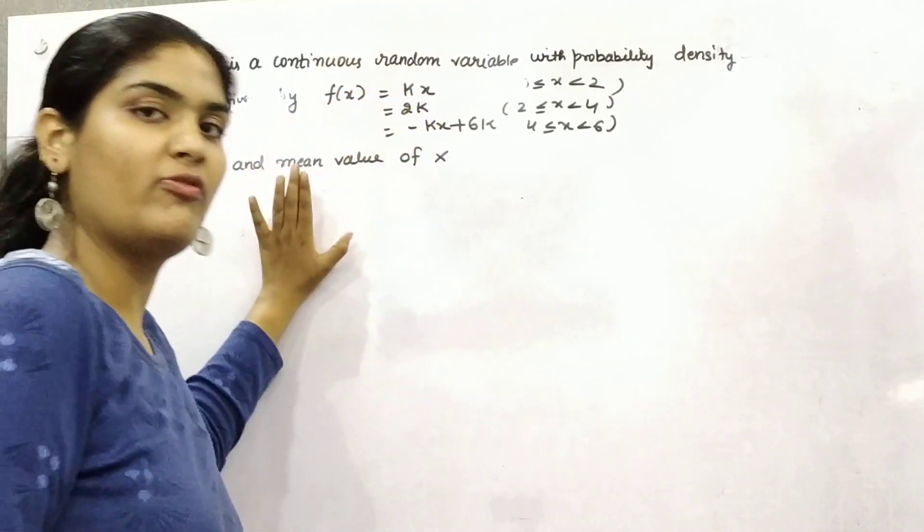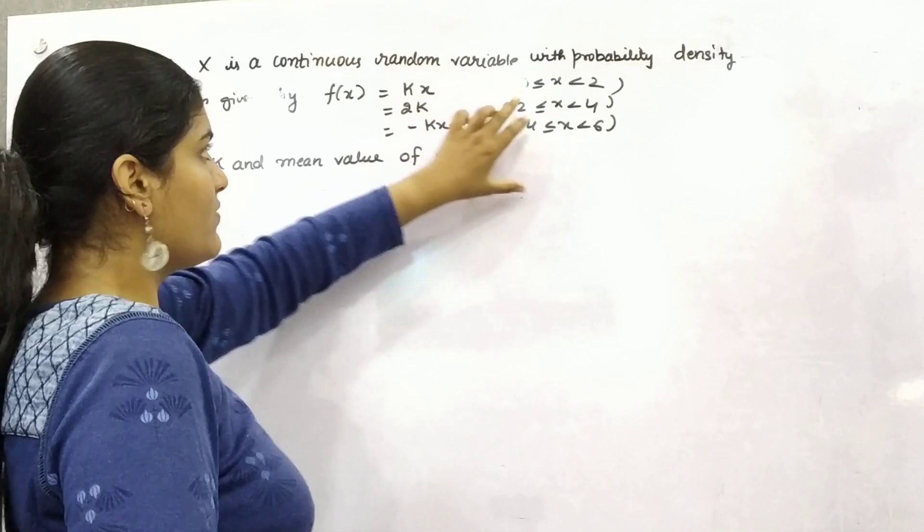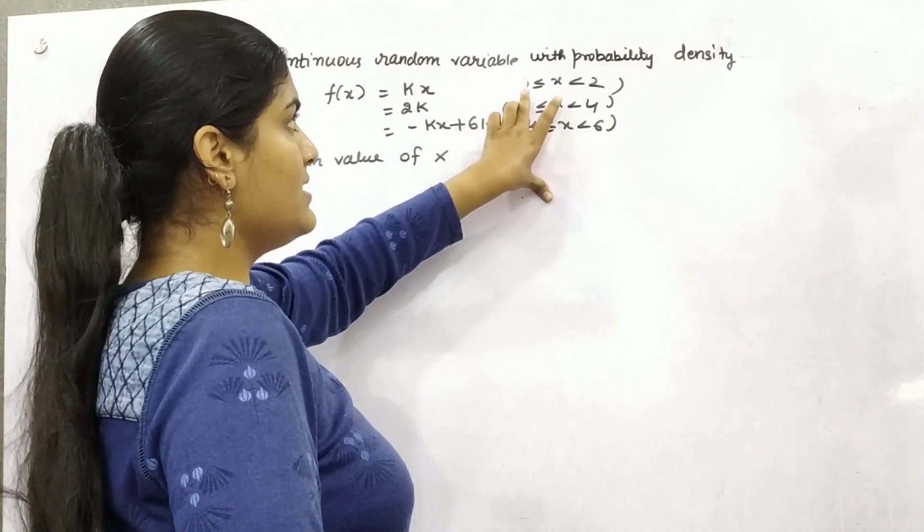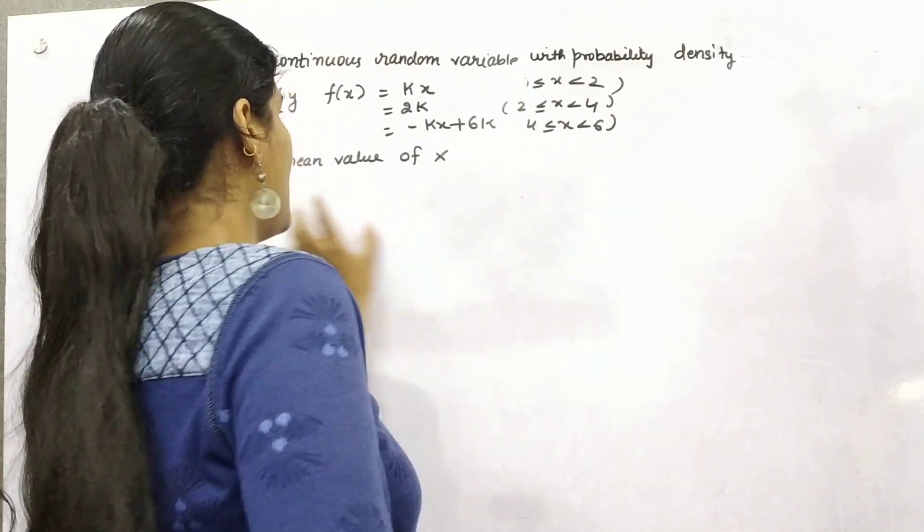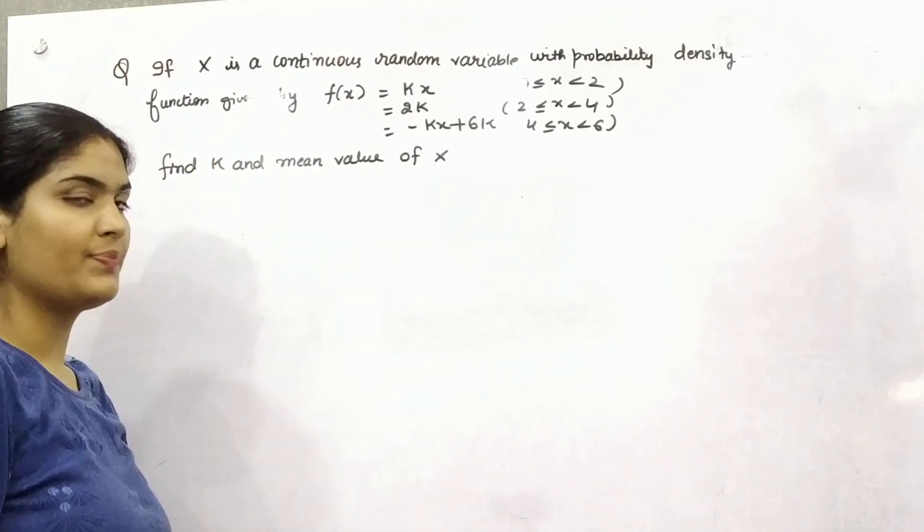If x is a continuous random variable with probability density function, this is in the form of function where limits vary from 0 to 2, 2 to 4 and 4 to 6 and you have to find out the value of k.